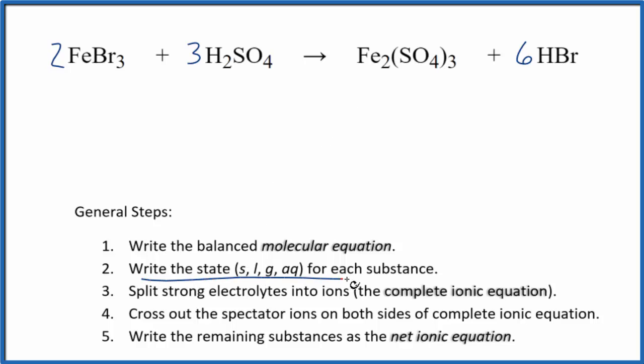Next, we'll write the states for each substance. So when we look at bromides, they're in general soluble, a few exceptions. So this will be soluble. Strong acid, sulfuric acid. It'll dissociate into its ions.